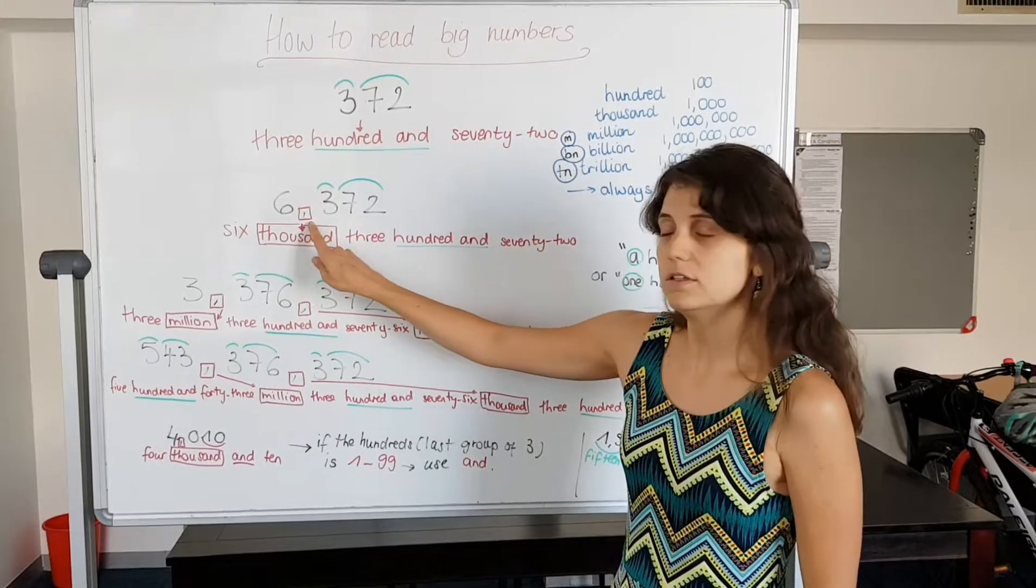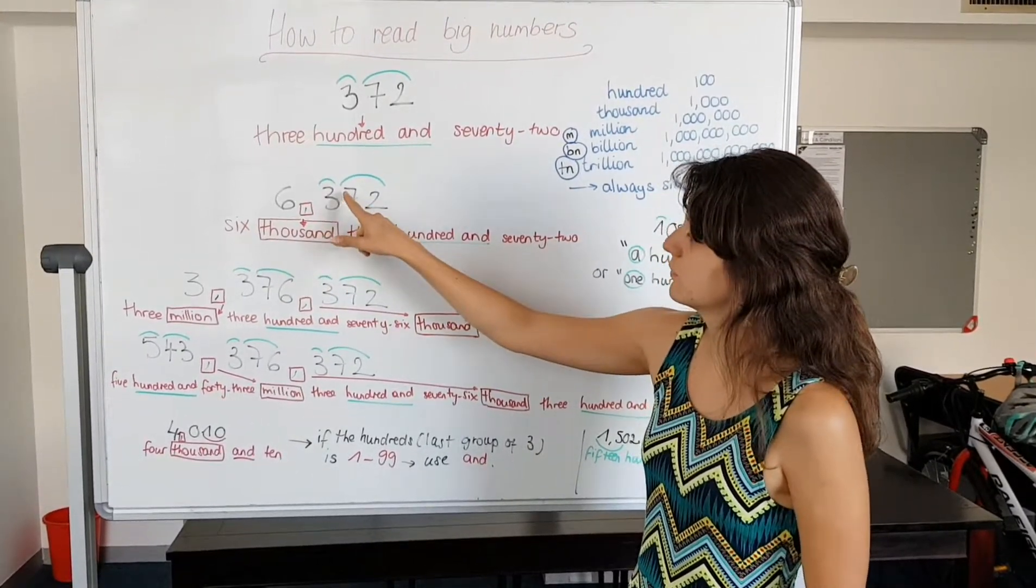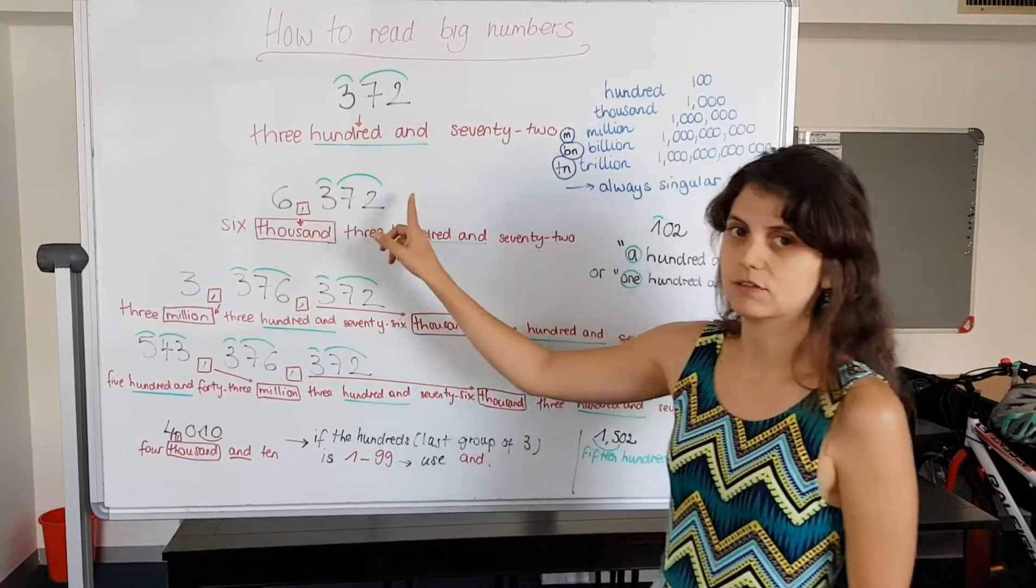Put a little comma, thousand, and then again, three hundred and seventy-two. Six thousand three hundred and seventy-two.